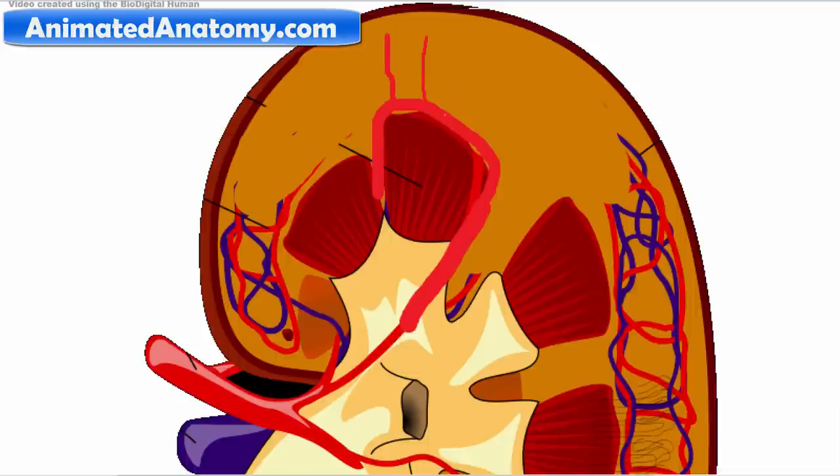And then these cortical radiate arteries give away the blood to the structure called the Bowman's capsule. And that's where the blood gets filtered out.